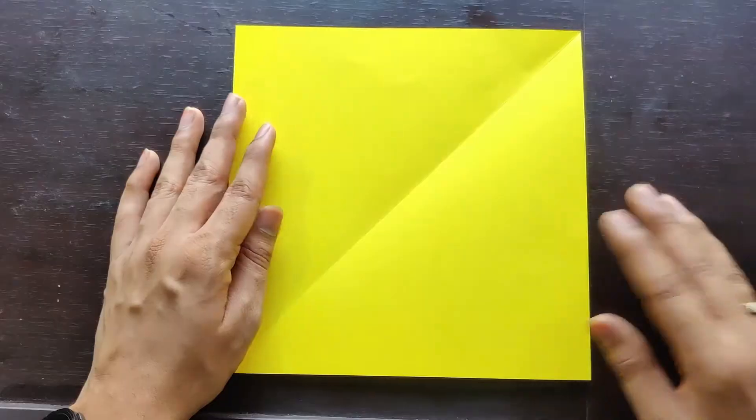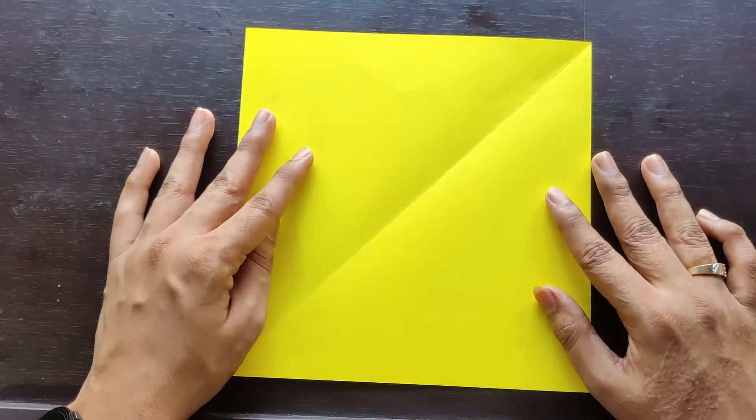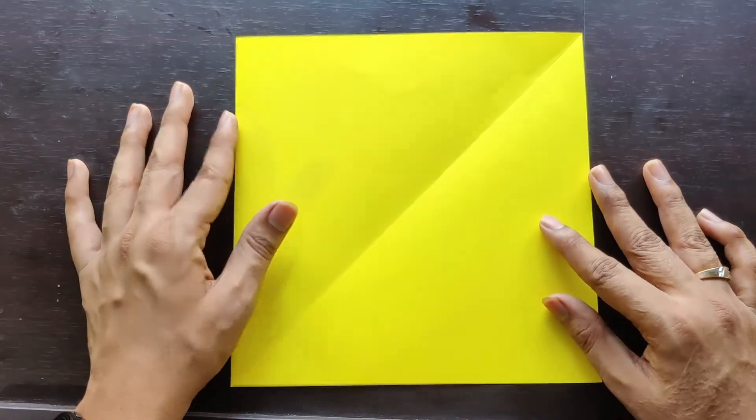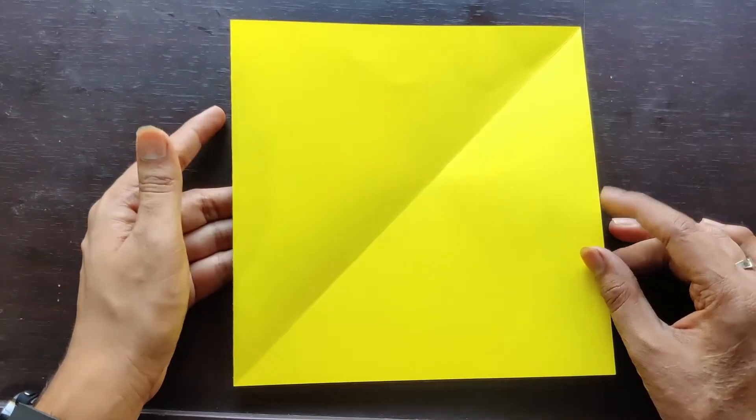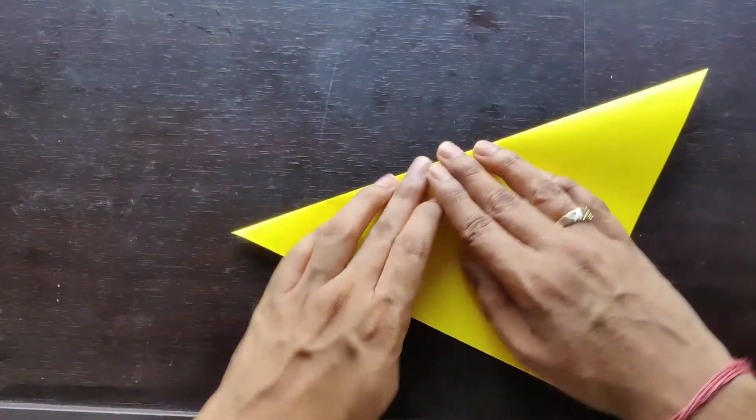Without further delay, let's begin the show. For this origami cat face model we'll need a square piece of paper. First we'll fold along the diagonal axis like this.